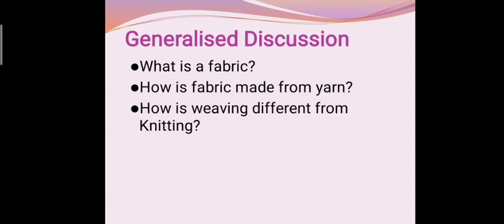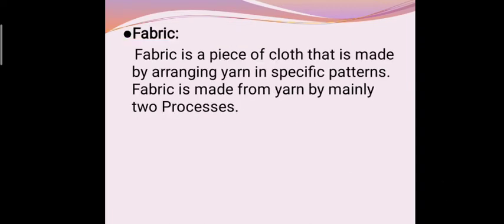Now how is weaving different from knitting? The answers of these questions are summarized in further explanation. Fabric is a piece of cloth that is made by arranging yarn in specific patterns. Fabric is made from yarn by mainly two processes, weaving and knitting.